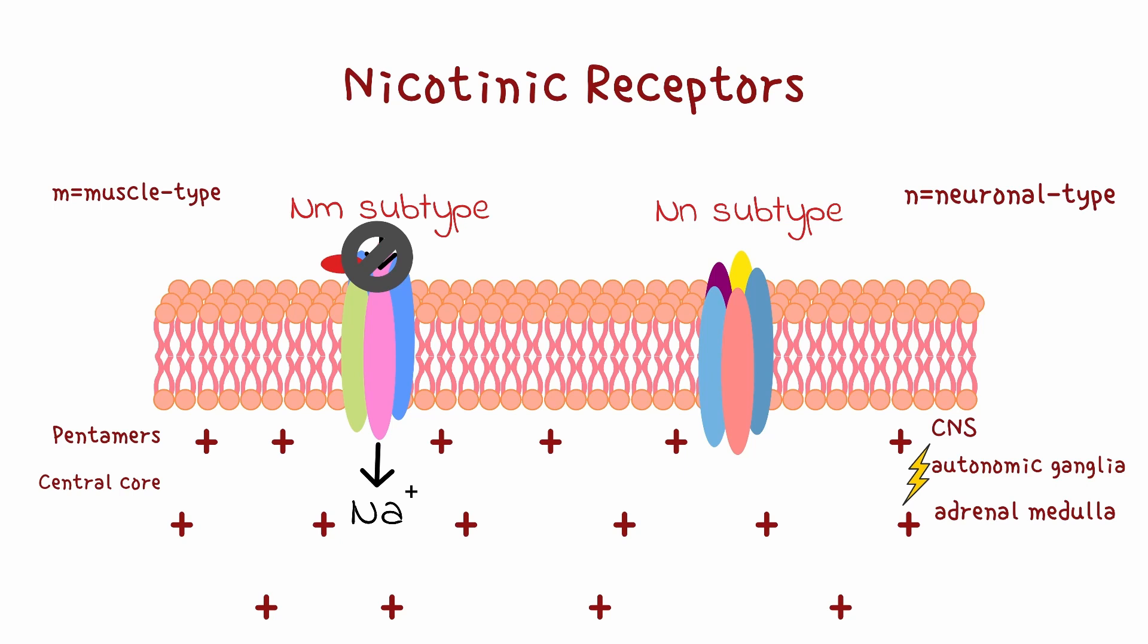They are also present on the adrenal medulla. NN receptors are the target for ganglionic blockers like mecamylamine.